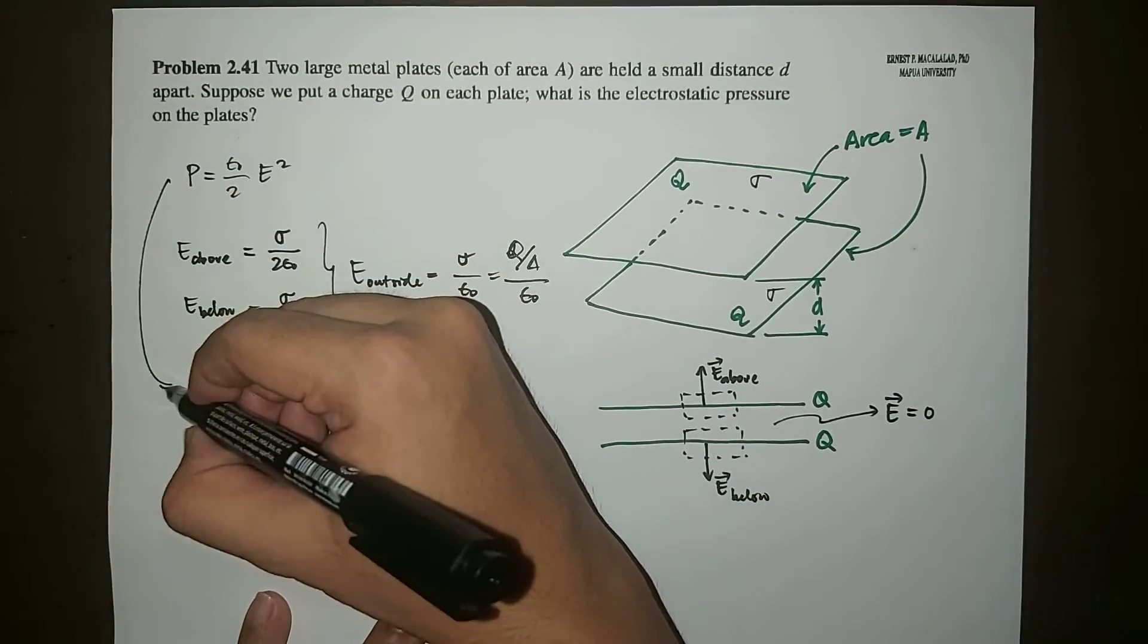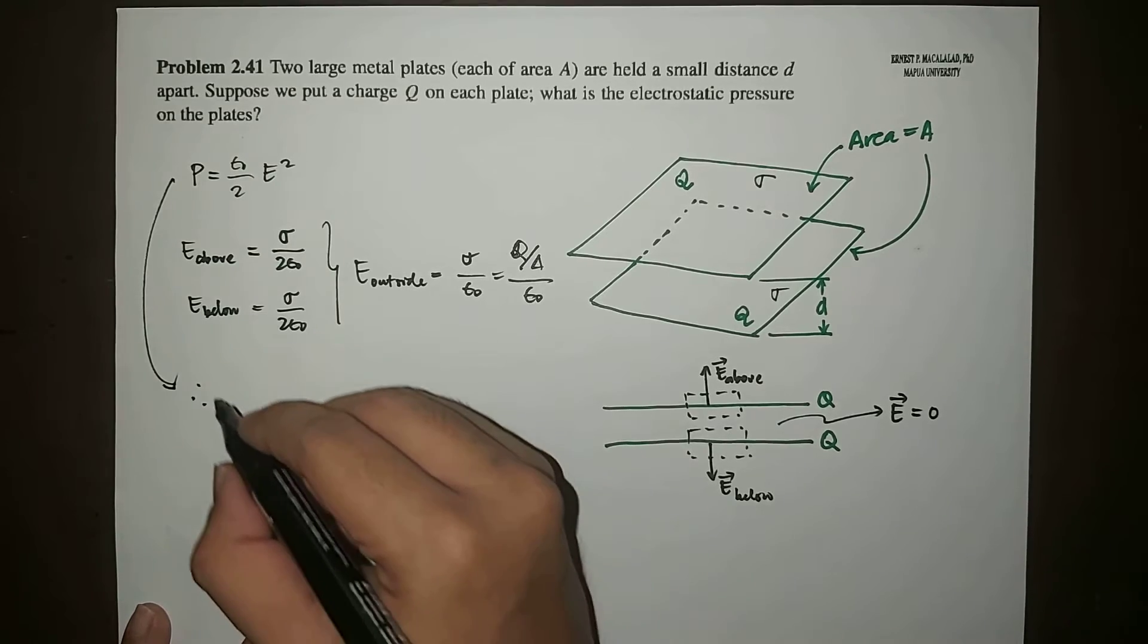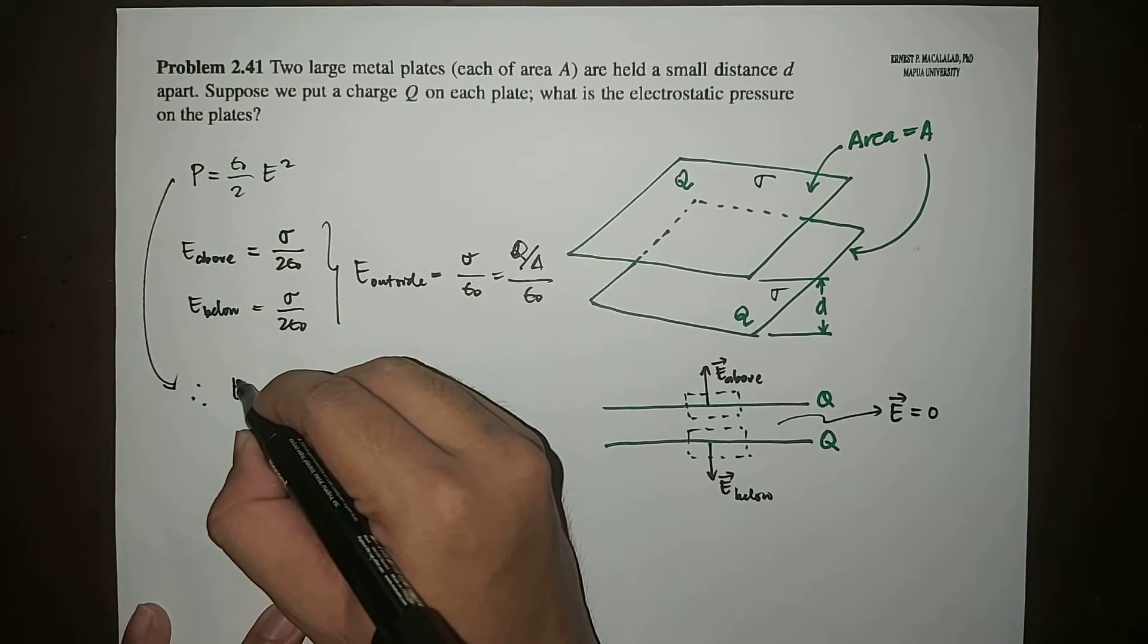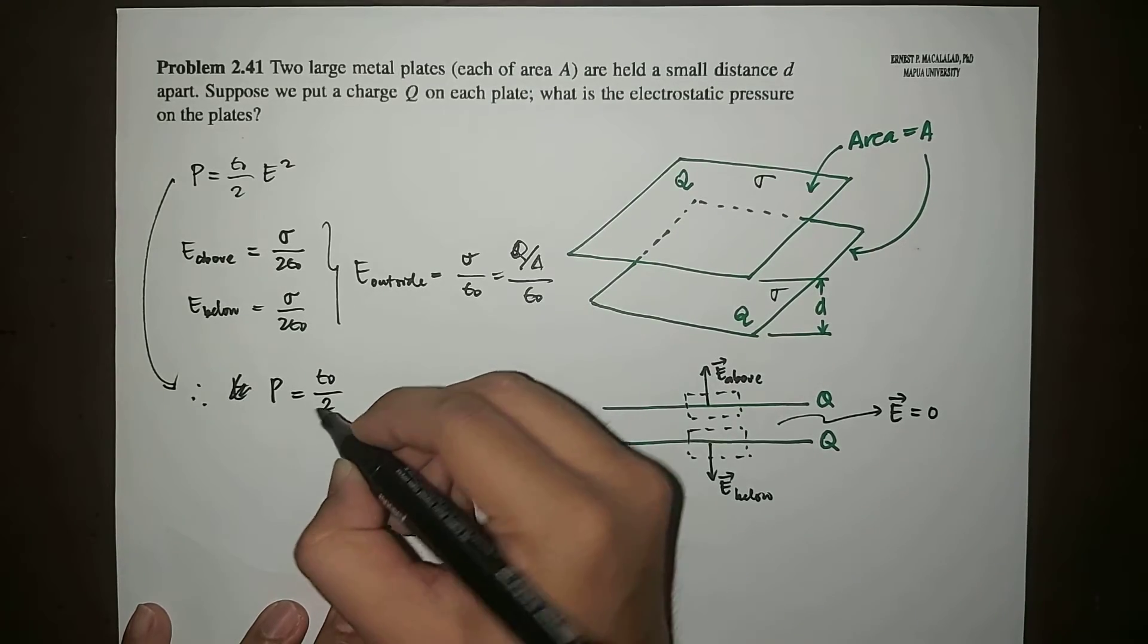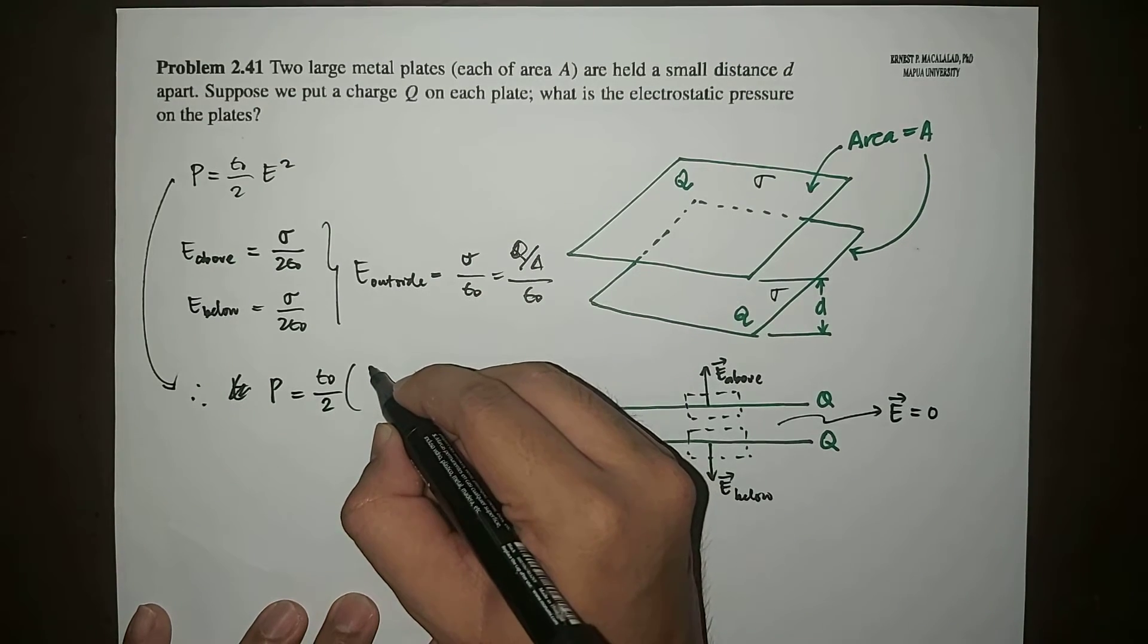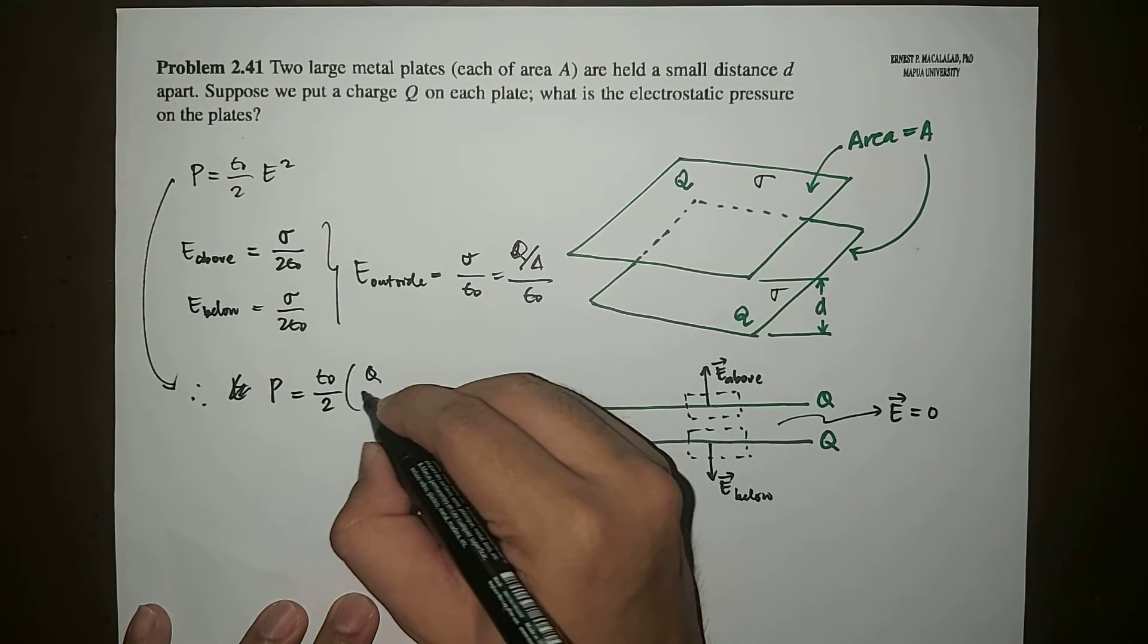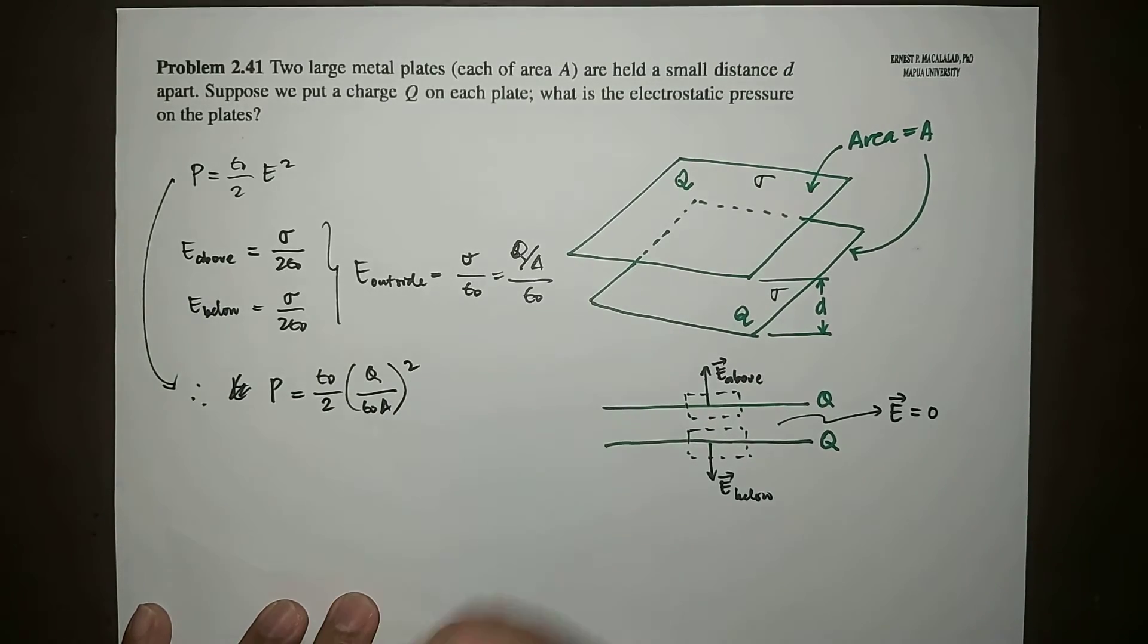The electrostatic pressure will now be equal to P equals epsilon naught over two times the square of the electric field, which is Q over epsilon naught A squared.